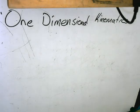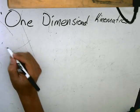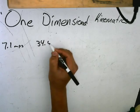Okay, so today we're learning about one-dimensional kinematics. The first equation: a bike accelerates uniformly from rest to a speed of 7.1 meters per second over a distance of 34.4 meters. We want to determine the acceleration of the bike.